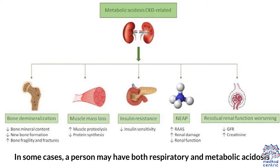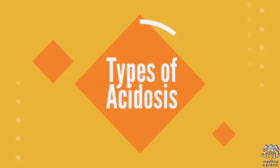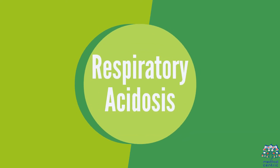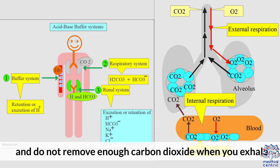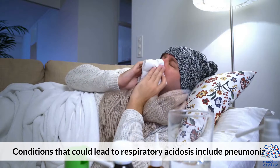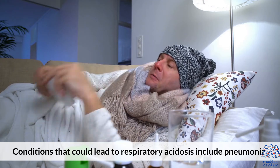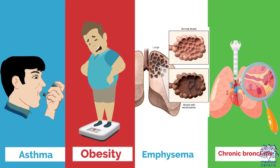In some cases, a person may have both respiratory and metabolic acidosis. Types of acidosis: Respiratory acidosis. Respiratory acidosis occurs when the lungs are affected by a disease or other disorder and do not remove enough carbon dioxide when you exhale. Conditions that could lead to respiratory acidosis include pneumonia, asthma, obesity, emphysema, and chronic bronchitis.